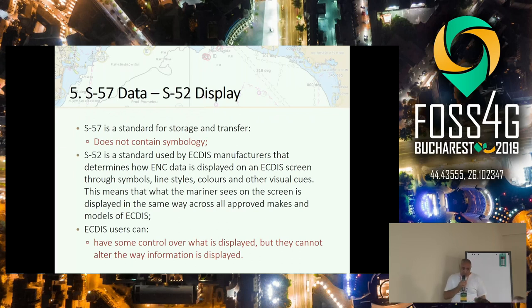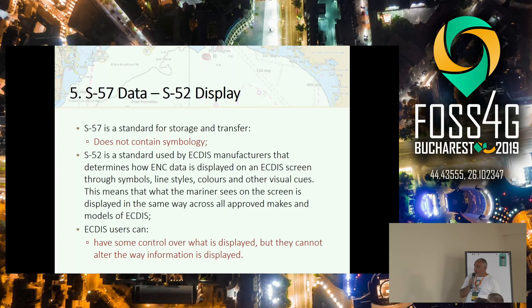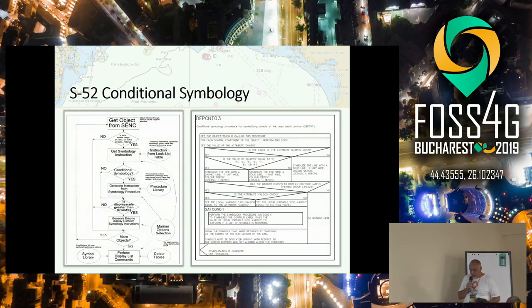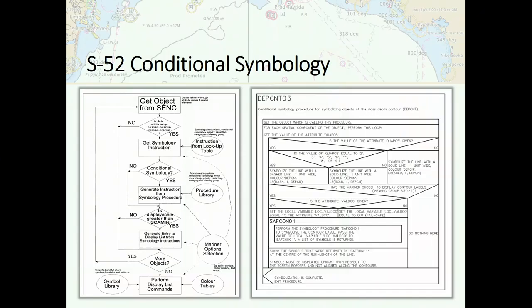S57 is the storage model for the data — the way information is encoded in the file. S52 represents the standard for displaying this kind of chart. They are separated, and each standard is updated independently. The difference and the update that came from paper charts is that with this, they can store more and more information. Although you have only one map, this map can change depending on the situation. For example, for the layers, we implemented some kind of decision model when rendering — it is called conditional symbology. Depending on what scale you are viewing the chart, some features will be visible and some won't, so as not to crowd the display.